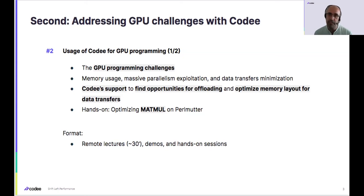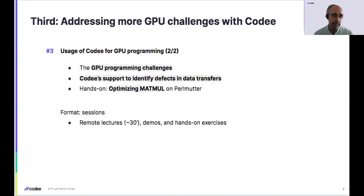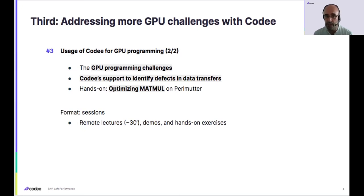The exact same sequence and process you will use for the Pi example in part one is exactly the same process you will use for Matmul to optimize it on Perlmutter. And also, exactly the same sequence will be used tomorrow in part three, where we will focus not on producing code that runs faster on Perlmutter using GPUs, but on detecting incorrect GPU code that may be hidden in our implementations — code that when executed on the GPU makes it crash or produce incorrect results. This is what we call identifying defects in the GPU code.